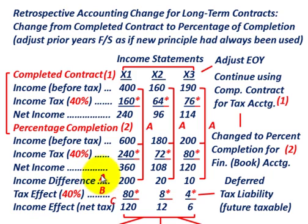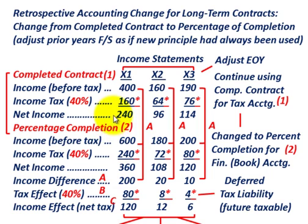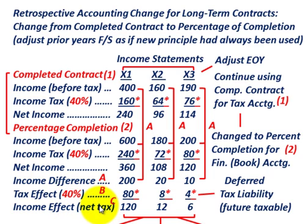When making this retroactive retrospective accounting change in principle from the completed contract method to the percentage of completion method, we have to determine the income difference between both methods. Based on that income difference, we determine the tax effect, and then we also need to know the income effect net of any tax.